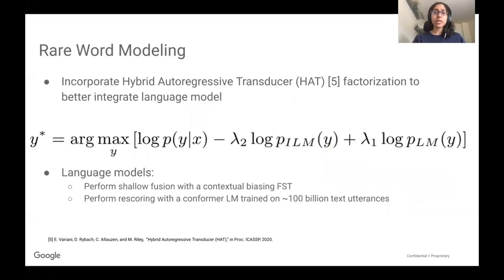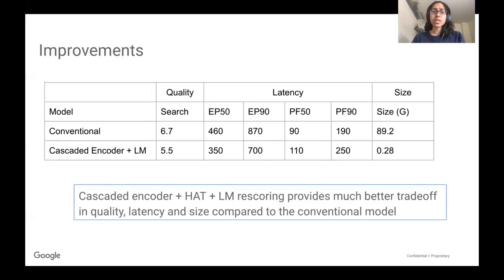To address rare word modeling, we incorporate the hybrid autoregressive transducer or HAT factorization. In this factorization, P of Y given X is the end-to-end model score. We subtract out an internal language model score and then add in an external language model. In this work, we explore shallow fusion with a contextual biasing FST and rescoring with a conformer language model.